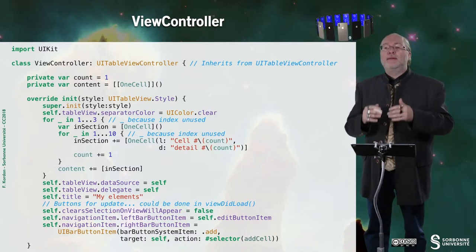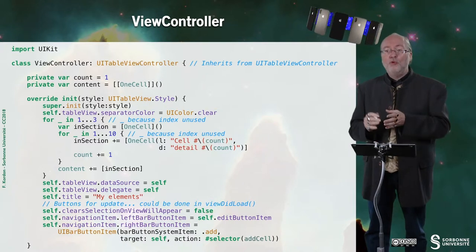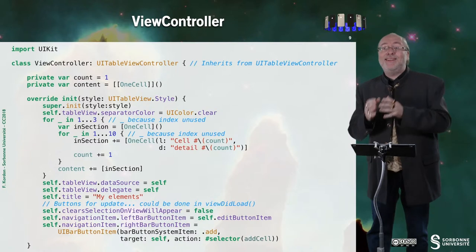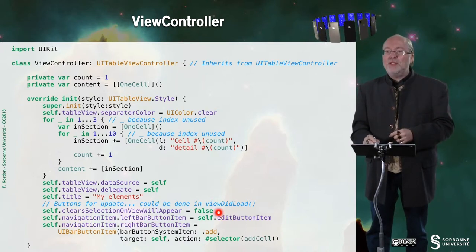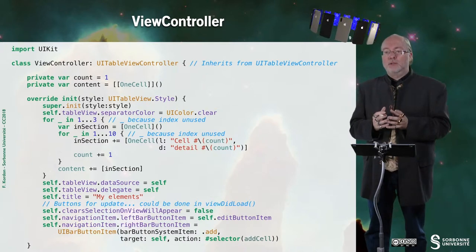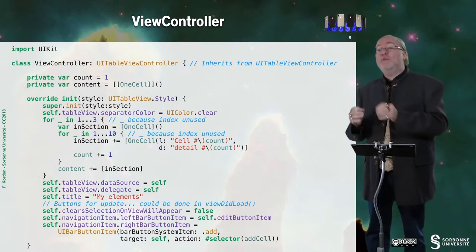I have to do something more than in the previous example. First, I can decide that when the table view appears, if a cell was selected, this cell remains selected. If I set it to true, then the selection is cleared. The second thing is to have the edit button item — which is embedded in the UITableViewController and comes from UIViewController — associated to one of the bar button items of the navigation bar.